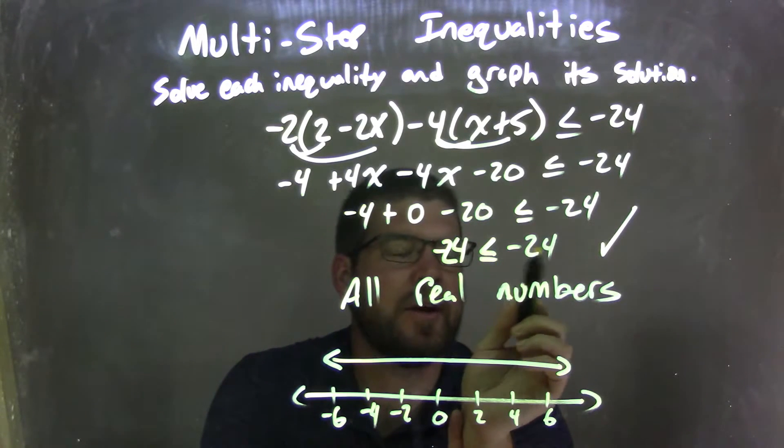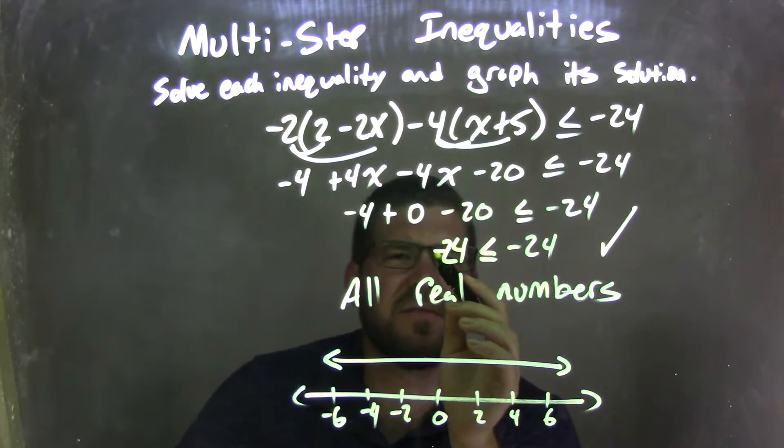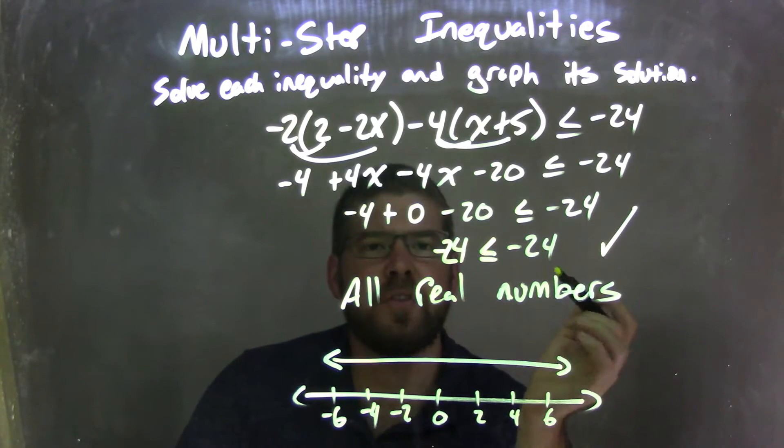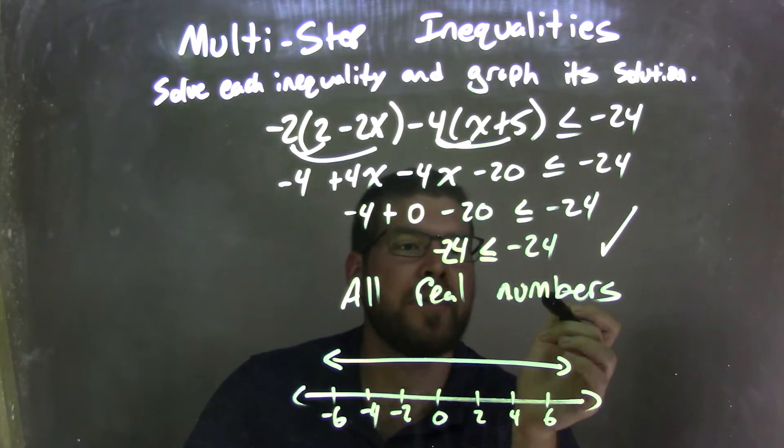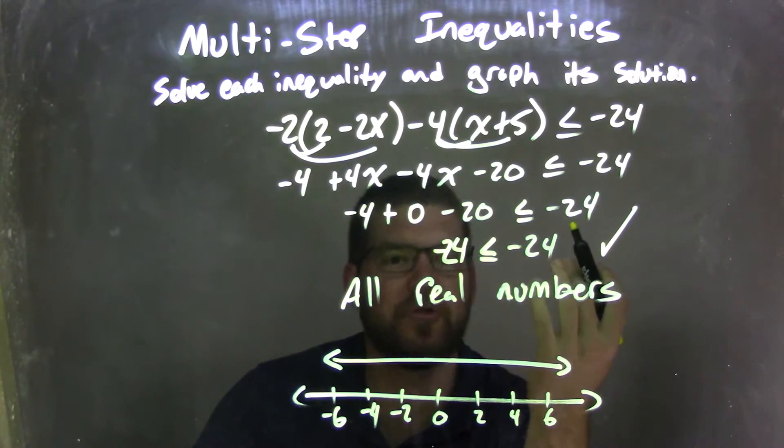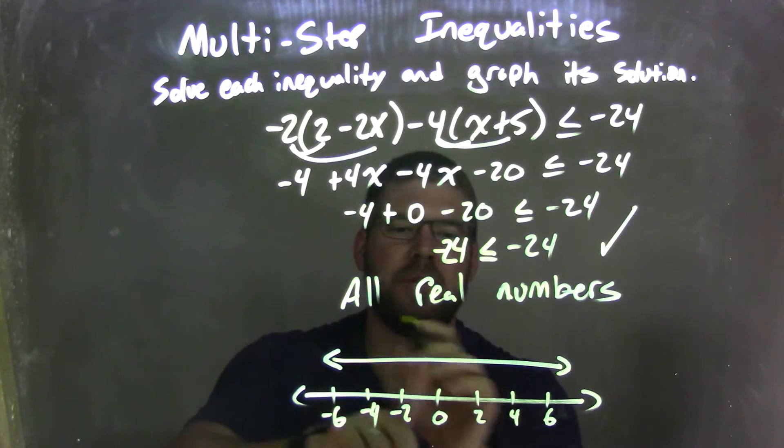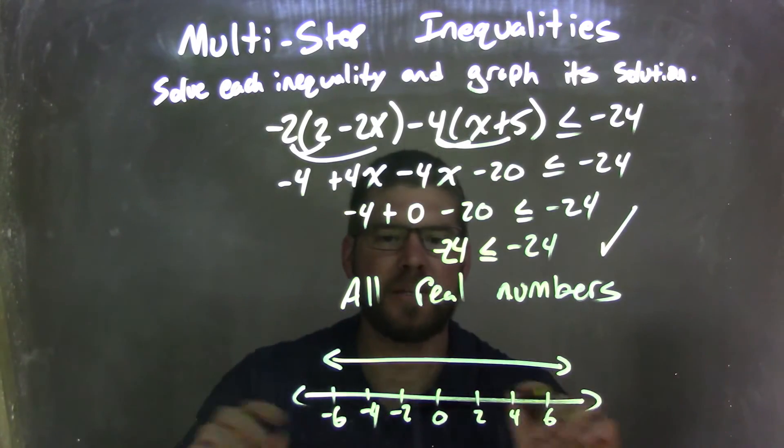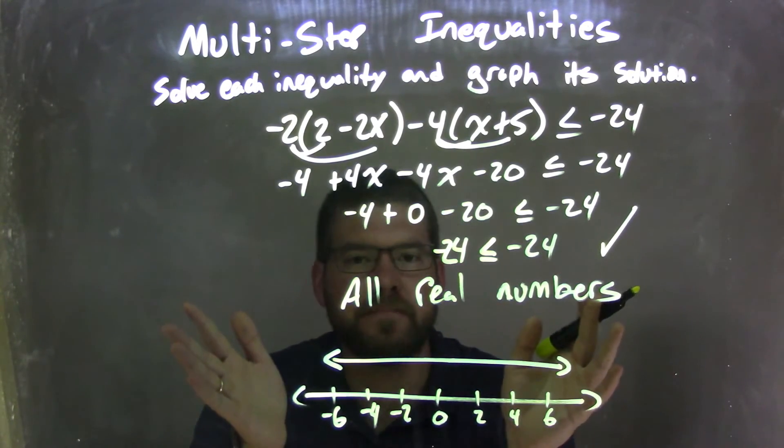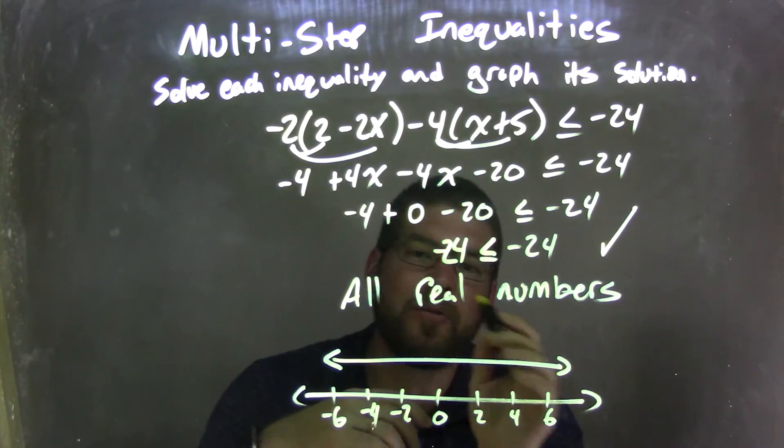That's less than or equal to negative 24 right there. So now I have, well, negative 24 is less than or equal to negative 24. That is a true statement. So since that's a true statement, my answer here is all real numbers, meaning all real numbers can plug in for x, making this a true statement. So how do I graph that? So I put my number line here, and I just put arrows, a little straight line with the arrows going both directions, showing that any real number on the number line is a solution. So our graph here matches our final answer, which is all real numbers.